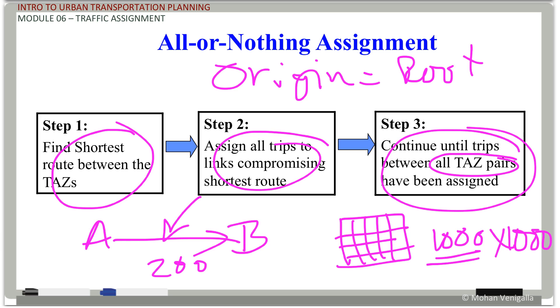And Washington DC network has 3700 zones. You do the math.